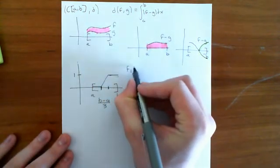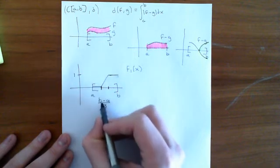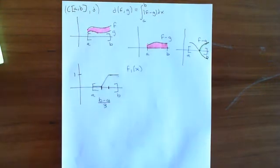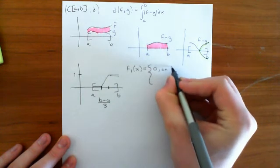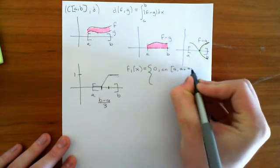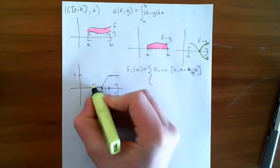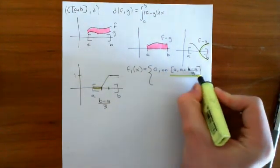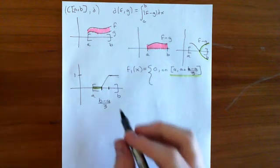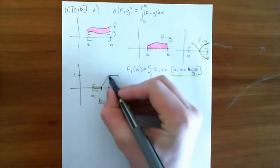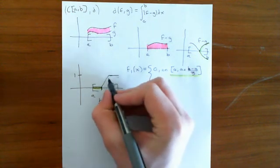We'll make f₁(x) the function where it equals zero on the interval from a to a plus (b minus a)/3, so that each of the three pieces is initially the same size. Then we want it to rise uniformly on the middle piece. To find the gradient of that straight line rising to 1: the gradient is the change in y over the change in x, which is 1 divided by (b minus a)/3.